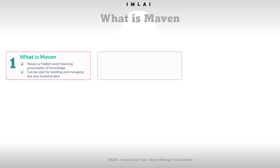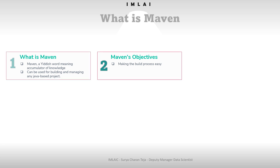Now the question arises: they have built the Maven tool, but what are the objectives of Maven? Maven's primary goal is to allow a developer to comprehend the complete state of a development effort in the shortest period of time. In order to attain this goal, Maven deals with several areas of concern: making the build process easy, providing a uniform build system, providing quality project information, and providing and encouraging better development practices.